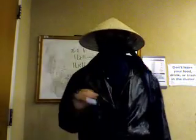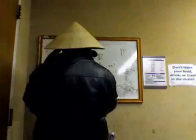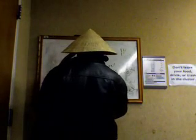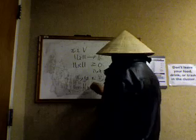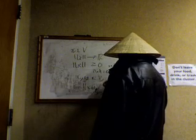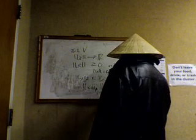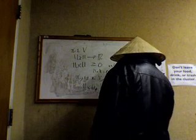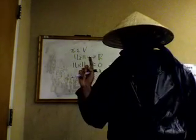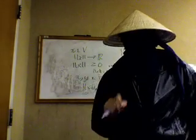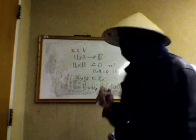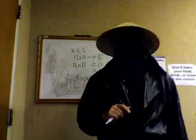The second property: for x, y in V, the norm of x plus y is less than or equal to norm of x plus norm of y. This is analogous to when we did metric spaces — the triangle inequality held. Now we're dealing with norms and the triangle inequality holds here too.